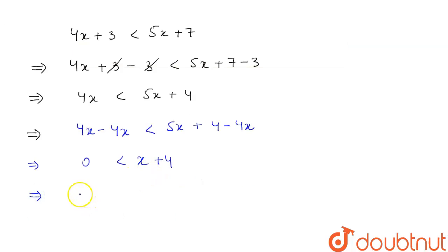And when we subtract 4 on both sides, we will get 0 minus 4 is less than x plus 4 minus 4. That will give the value as minus 4 is less than x.